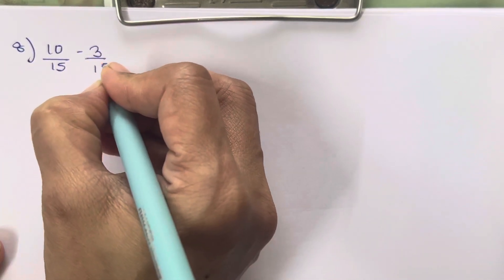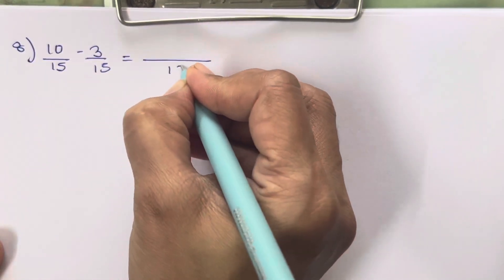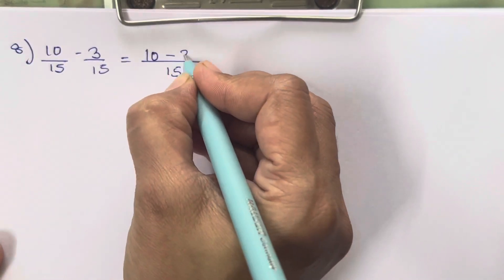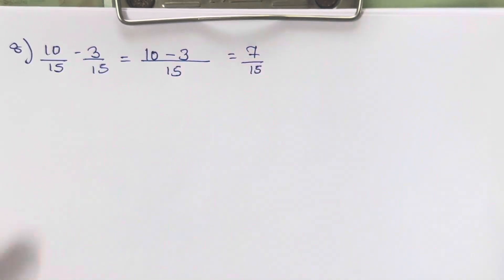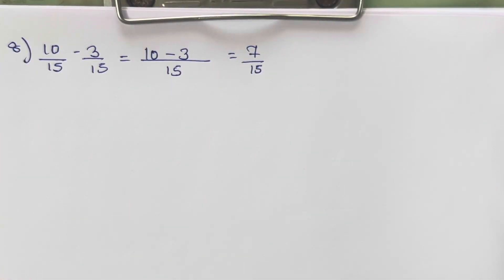Let's solve the last sum, that is the 8th sum: 10 upon 15 minus 3 upon 15. So when the denominator is same, write it once. 10 minus 3 is going to be 7 upon 15. It cannot be reduced, so let's keep it as it is. Now let's move on to the problem sum that they have given over here.